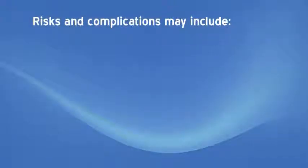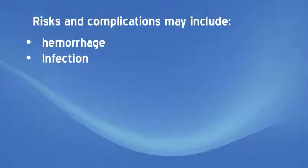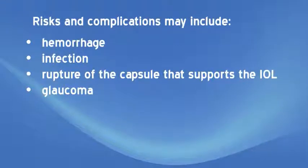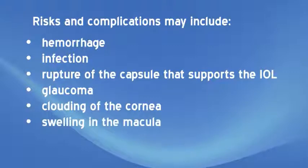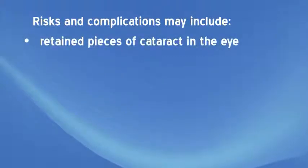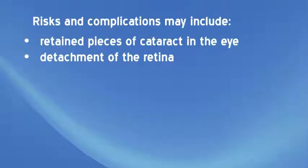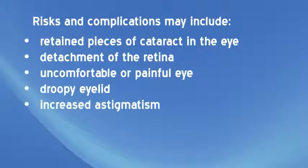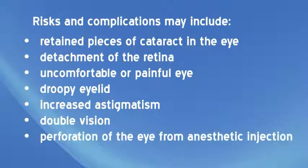Risks and complications associated with cataract surgery and lens implantation may include hemorrhage, infection, rupture of the capsule that supports the IOL, glaucoma or increased pressure in the eye, clouding of the cornea, swelling in the macula, retained pieces of cataract in the eye which may need to be removed surgically, detachment of the retina especially a high risk for very nearsighted patients, uncomfortable or painful eye, droopy eyelid, increased astigmatism, double vision, and perforation of the eye from anesthetic injection.